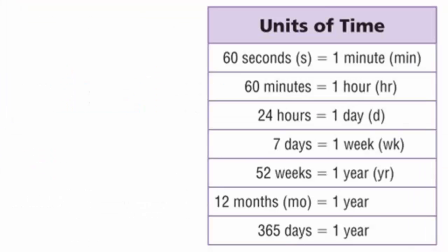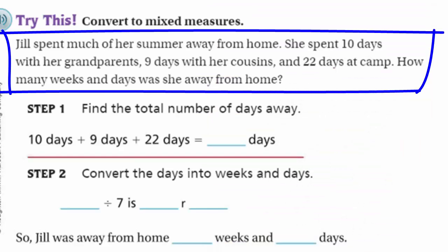Look at our table: 60 seconds equals one minute, 60 minutes equals one hour, 24 hours in one day, 7 days in a week, 52 weeks in a year, 12 months in one year, 365 days in one year. These are all basic units of time. Let's look at our problem.